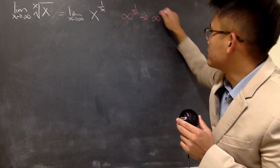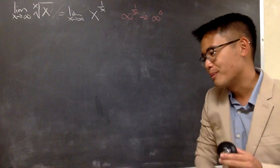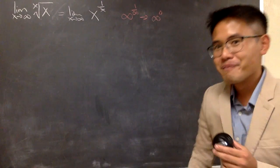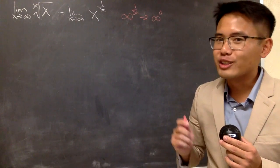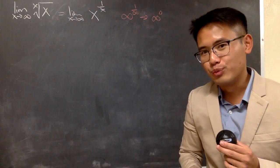So, we have infinity to the 0's power. And the problem is that this right here, it's an indeterminate form. We cannot draw any conclusion yet unless we do more work.